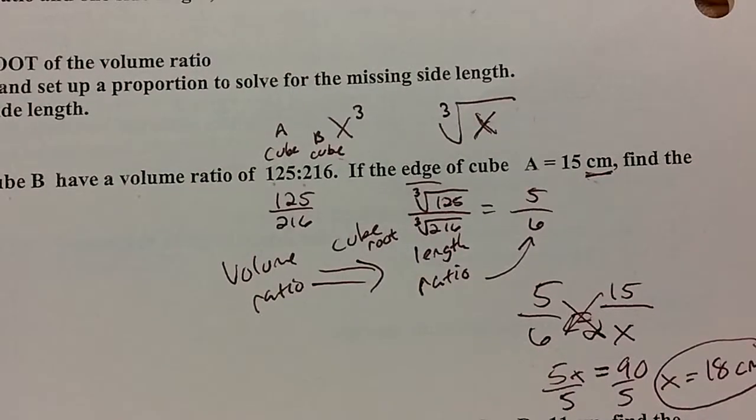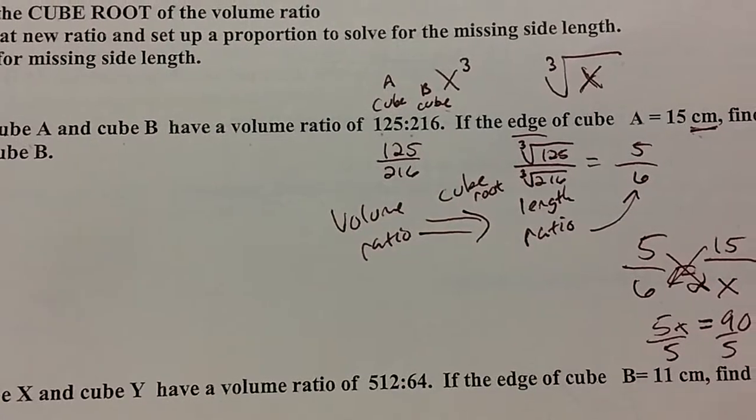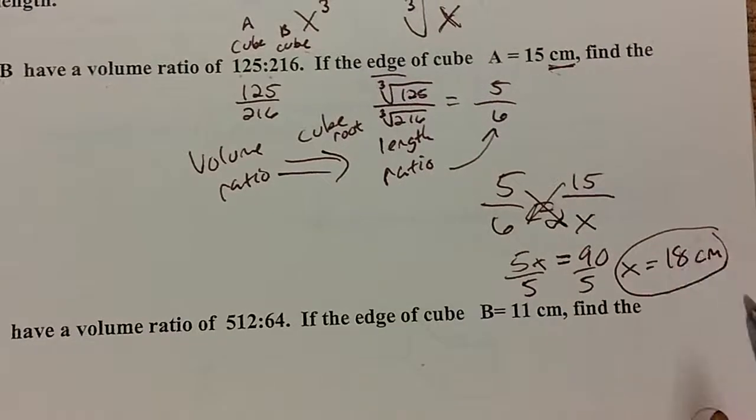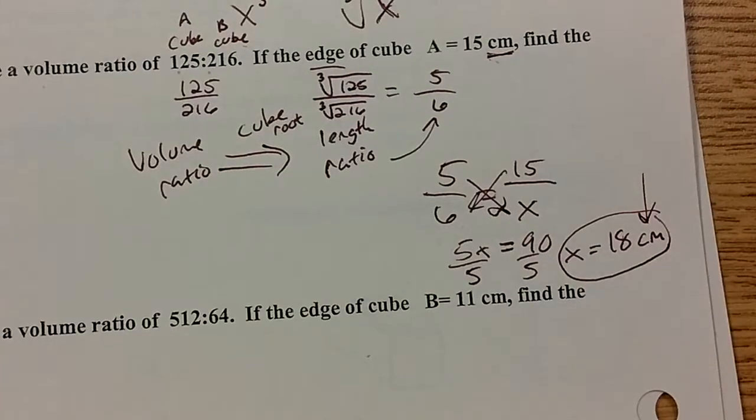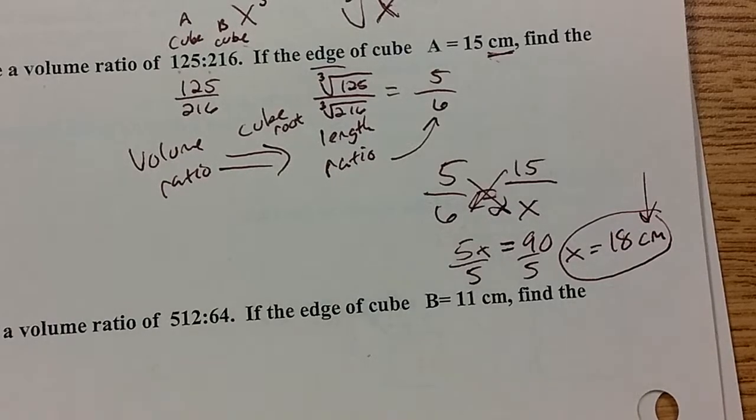So remember to look for what you're asked to find. You need to find that kind of ratio by either cube or cube rooting the given ratio. And then set up the proportion, solve. And then very importantly, give the correct units. Don't tell me it's cubic centimeters when you're finding a length and vice versa.